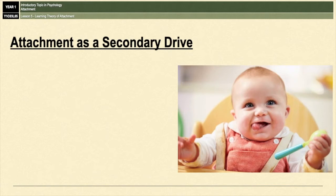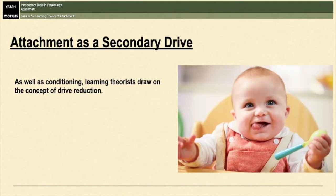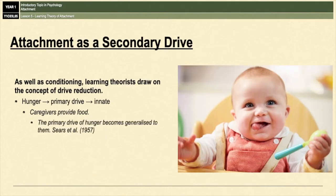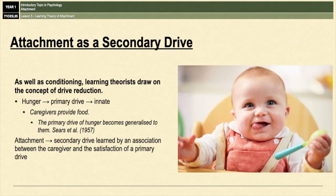Learning theorists also draw on the concept of drive reduction. Hunger can be considered a primary drive because it's an innate biological motivator — we are effectively driven to eat in order to reduce our hunger drive. Sears et al. in 1957 suggested that because caregivers provide food, the primary drive of hunger becomes generalized to the caregiver, making attachment a secondary drive, because it's learned through an association between the caregiver and the satisfaction of the primary drive.